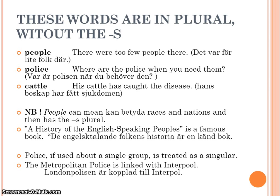Some words are in plural but don't have the plural s, such as people, police, and cattle. Even if there is no s on the noun, it's in plural. However, people can mean races and nations, and then you do add the s plural. An example: A History of the English-Speaking Peoples is a famous book. When you talk about a single group — the Metropolitan Police — you treat it as singular.